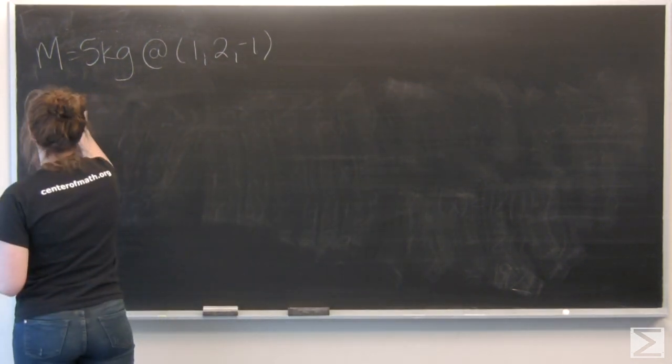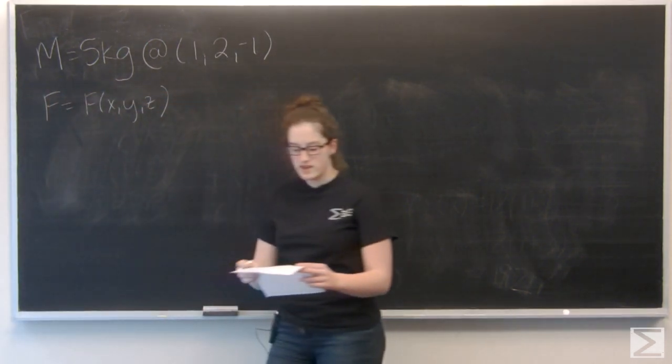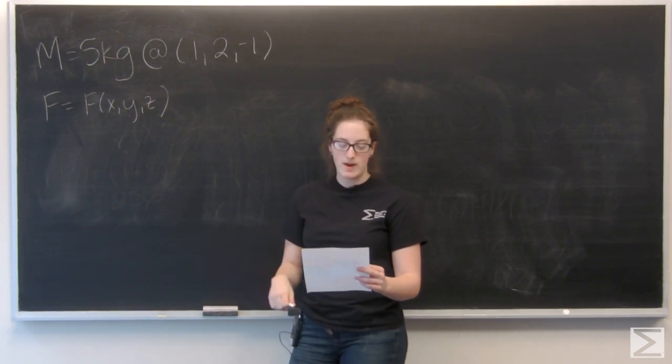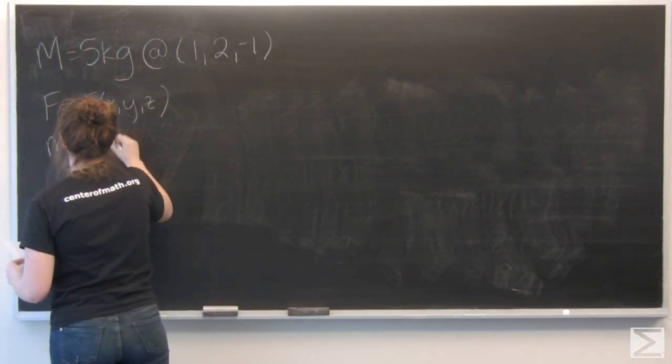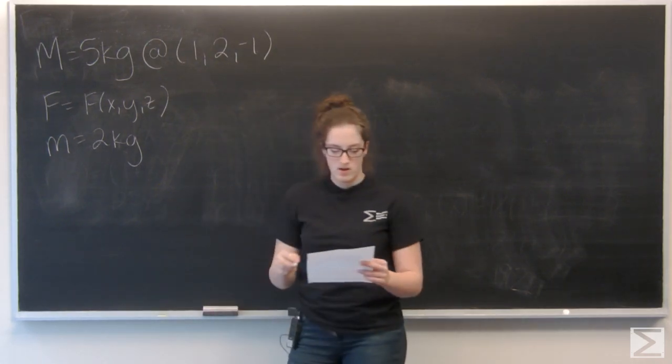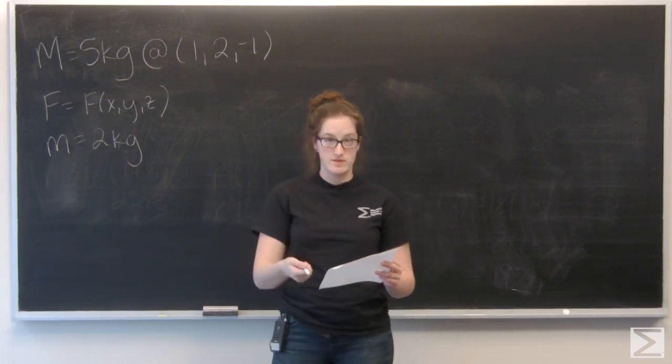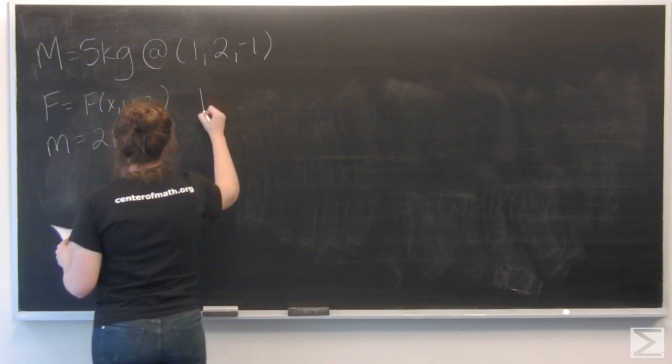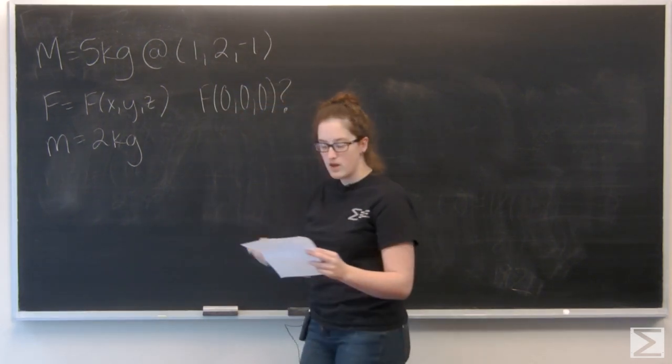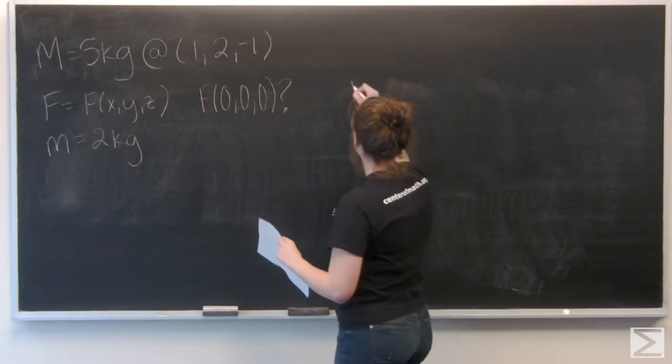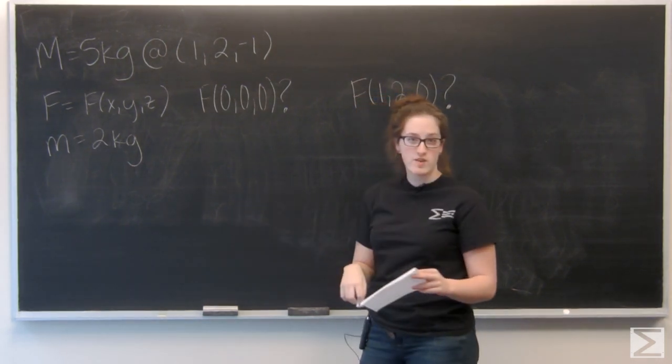and z be the gravitational force field that M exerts on a mass of 2 kilograms at any point in R3 other than the point 1, 2, negative 1. So what are the values for F of (0, 0, 0), F of (1, 2, 0), and F of (2, 4, 5)?